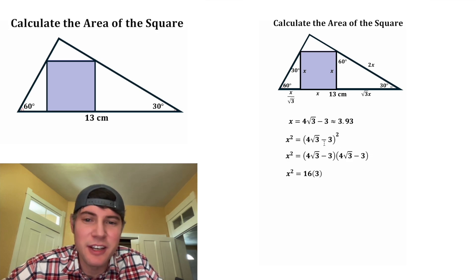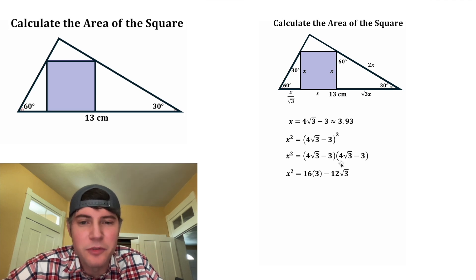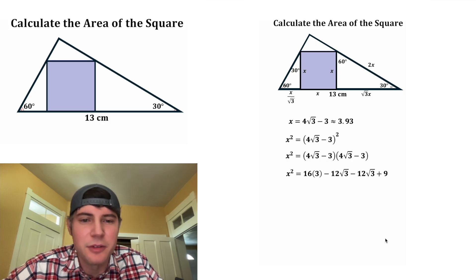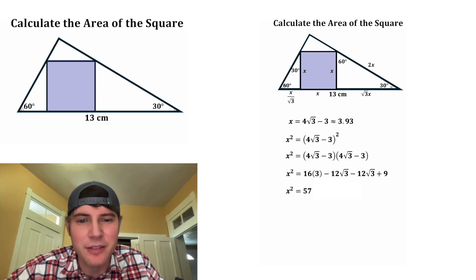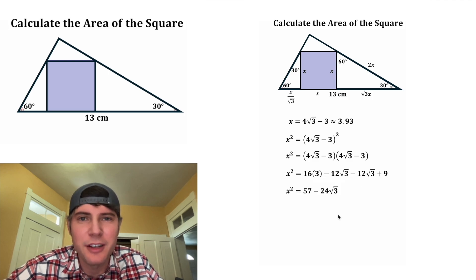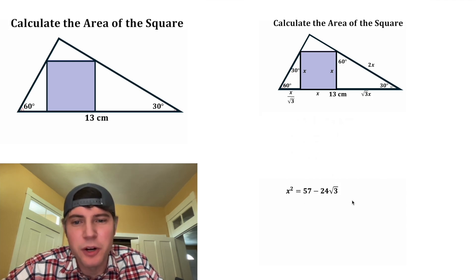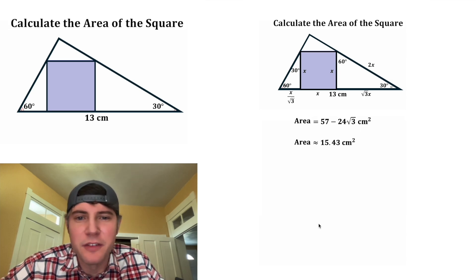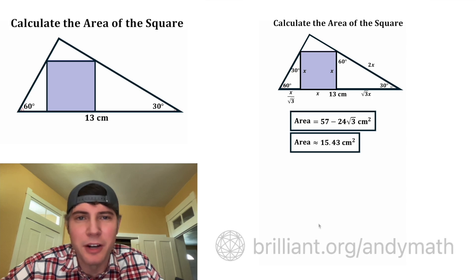Four times four is equal to 16, and radical three times radical three is equal to three. And then negative three times four rad three is equal to negative 12 rad three, and same thing, four rad three times negative three is also negative 12 rad three. And then negative three times negative three is equal to positive nine. 16 times three is equal to 48, and if we add nine, that's 57. And negative 12 root three minus 12 root three is negative 24 root three. This is the exact value of X squared, and that's approximately 15.43. And now we have the area of our square. Let's give it a label of centimeters squared and put a box around it.